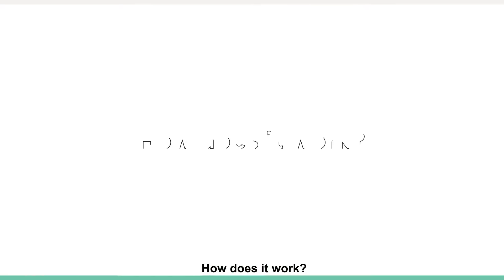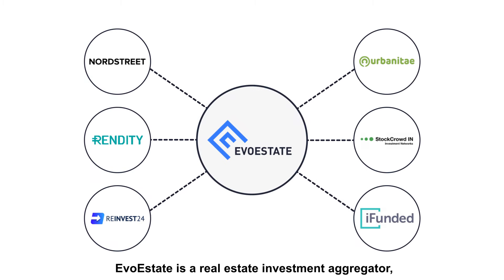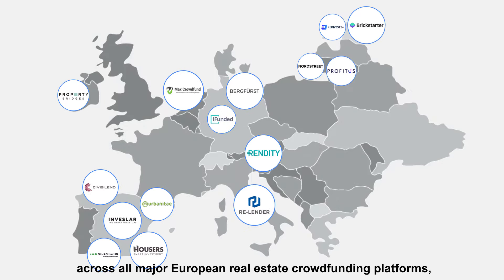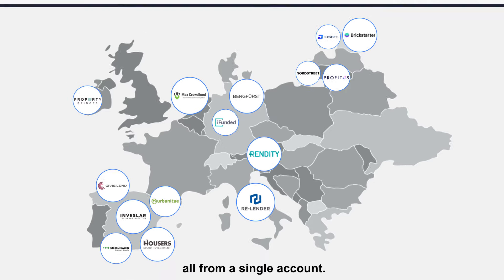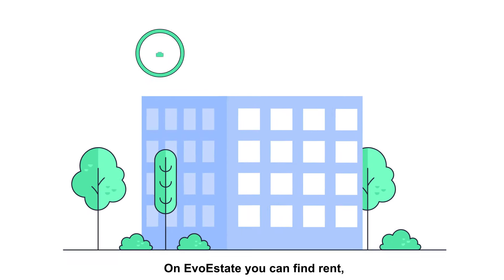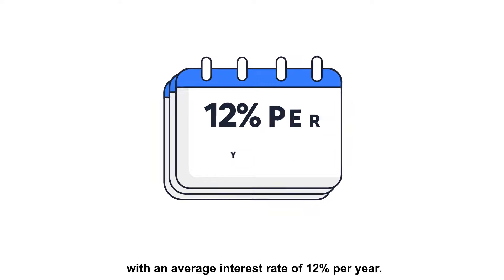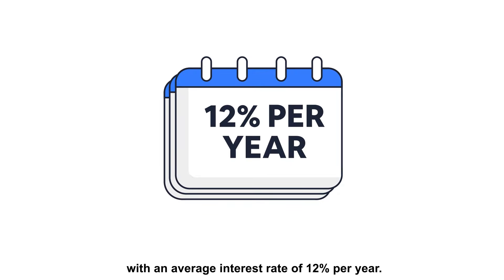How does it work? EvoEstate is a real estate investment aggregator, which allows you to invest across all major European real estate crowdfunding platforms, all from a single account. On EvoEstate, you can find rent, fixed interest and equity loans with an average interest rate of 12% per year.